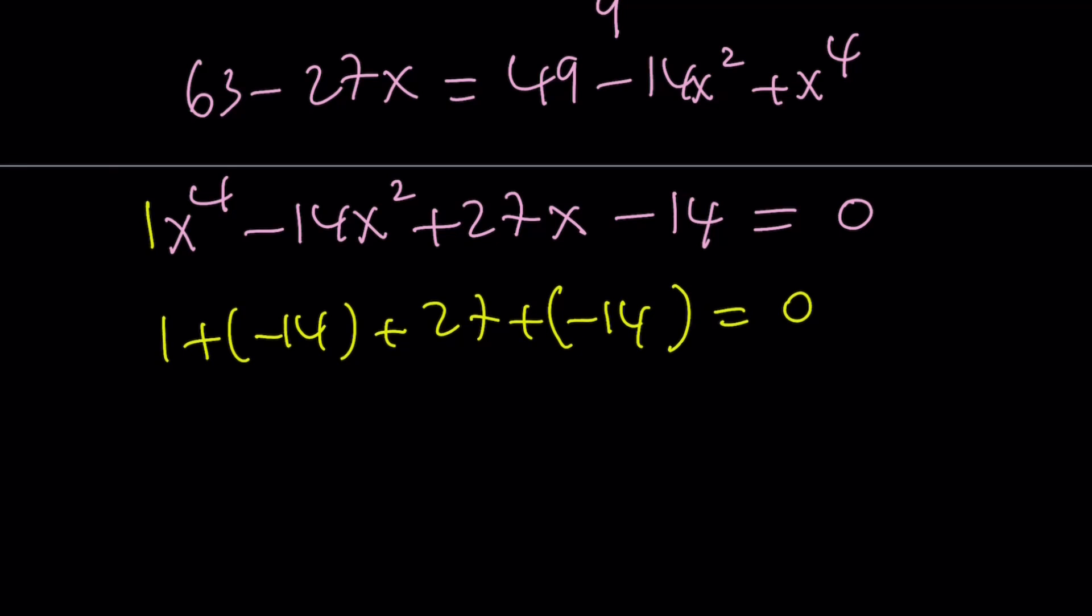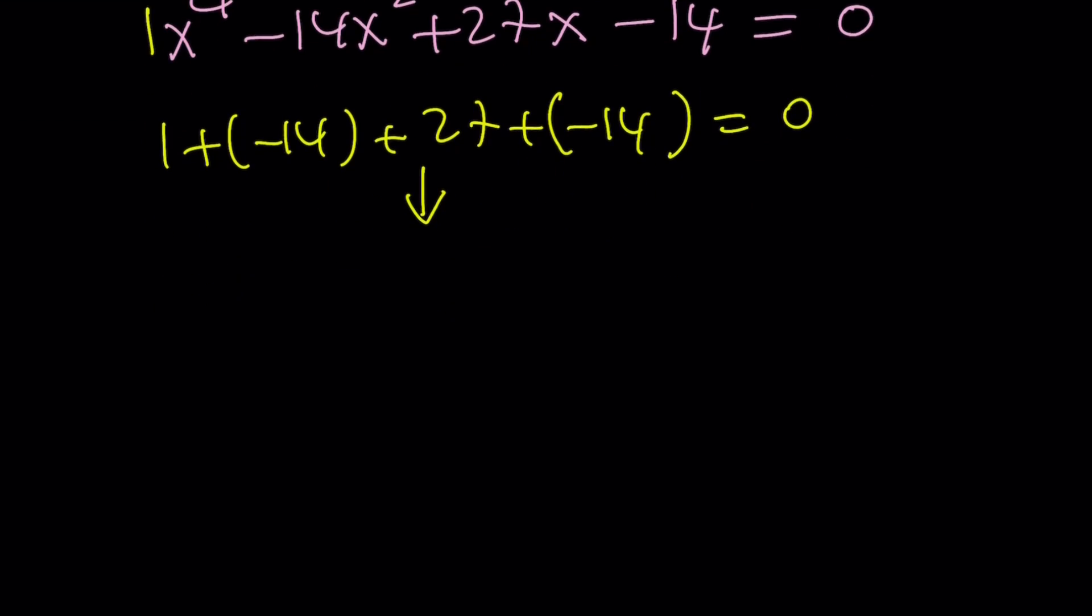You could also tell from Vieta's formulas, the sum is zero because there is no x cubed. So b is zero. Negative b over a is also zero. So there's a lot of ways to look at it. The sum of the coefficients equals zero implies that x equals one is a solution. And that's great. It's better than guess and check.